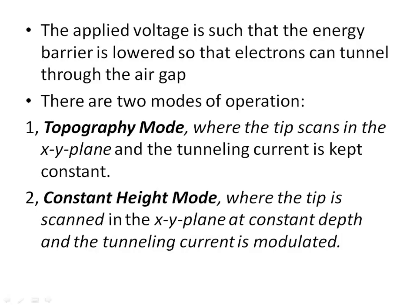The applied voltage is such that the energy barrier is lowered so that electrons can tunnel through the air gap. There are two modes of operation: (1) Topography mode, where the tip scans in the X-Y plane and the tunneling current is kept constant; and (2) Constant height mode, where the tip is scanned in the X-Y plane at constant depth and the tunneling current is modulated.